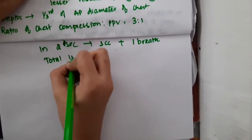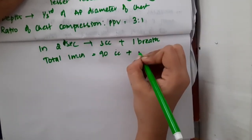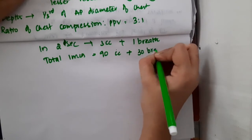Total in one minute, you will give 90 chest compressions with 30 breaths to the baby.